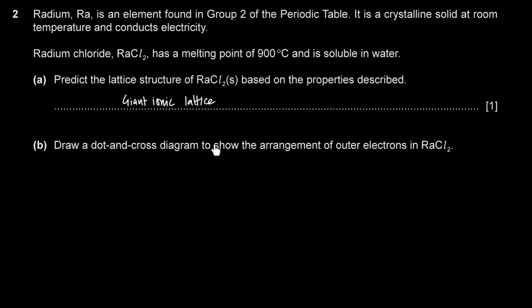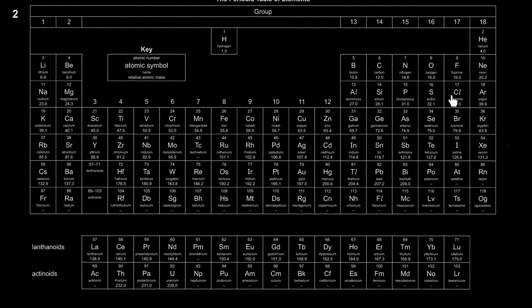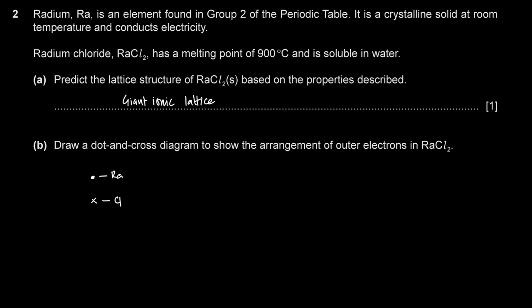Draw a dot and cross diagram for the outer electrons in radium chloride. Using dots for radium electrons and crosses for chlorine electrons: we have two chloride ions for every one radium. Chlorine is in group 17 with seven valence electrons; it gains one electron from radium to form Cl⁻. Radium is in group 2, period 6, with two valence electrons (6s²). When radium forms Ra²⁺, it loses both valence electrons, leaving the sixth shell empty. Each chlorine gains one electron from the radium. Radium has charge 2+; both chlorines have charge 1−.